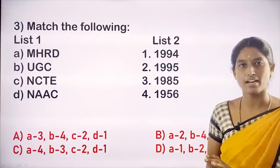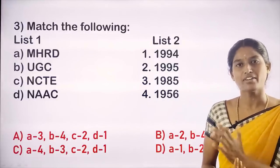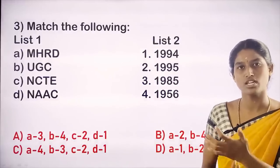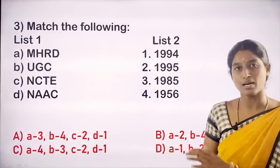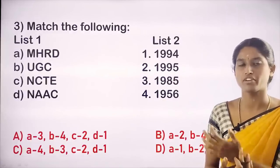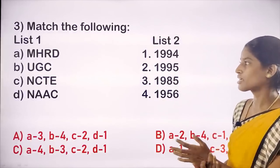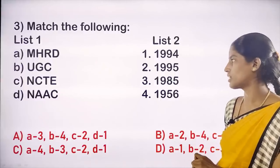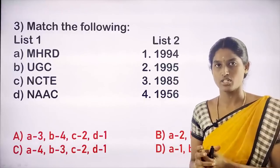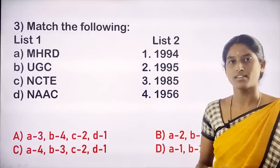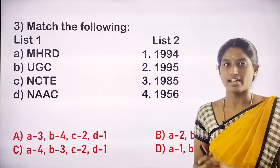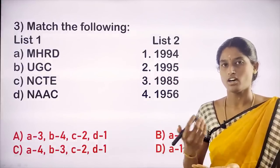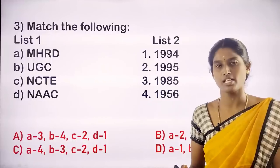In 1985, the Ministry of Human Resource Development was established as a new ministry, replacing the Ministry of Education. After that, in 2020, with the new educational policy, you have to look at the National Education Policy 2020 and match with the Ministry of Education. Coming to UGC — University Grants Commission — a statutory organization established in 1956. It was initially established in 1953 and became a statutory organization recognized in 1956.